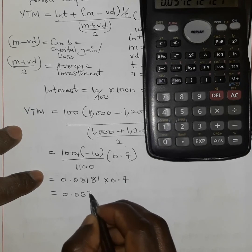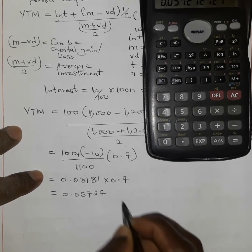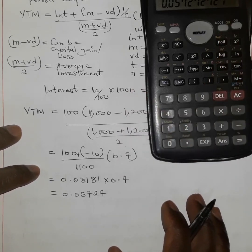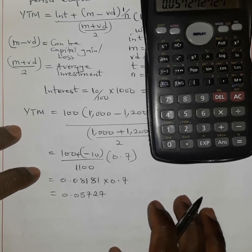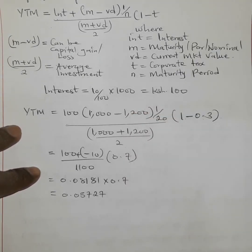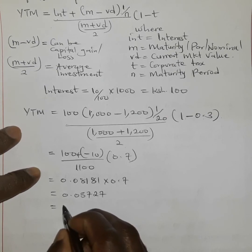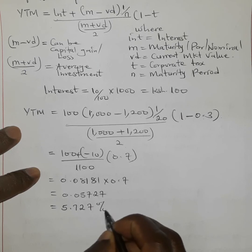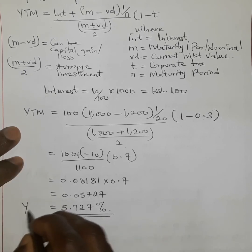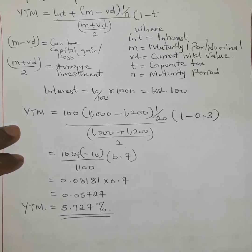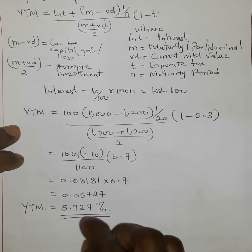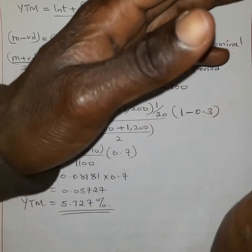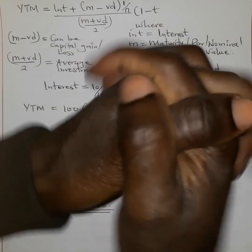So we have 90 divided by 1100, which equals 0.08181. Multiplying by 0.7 gives 0.05727. We are looking for the yield to maturity — at what rate will this debenture grow until it reaches maturity at 20 years. The answer is 5.727%. That is our yield to maturity, meaning this debenture will be growing at this rate until the 20 years elapses. Please subscribe for more videos.